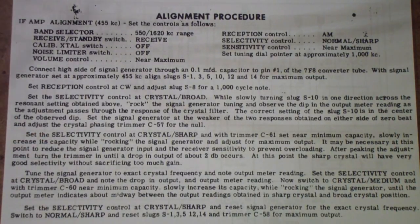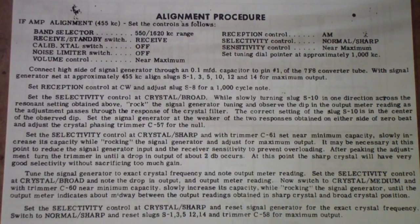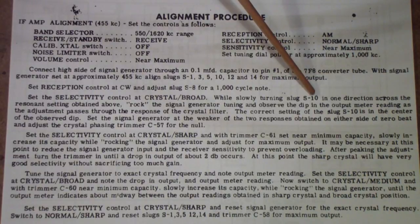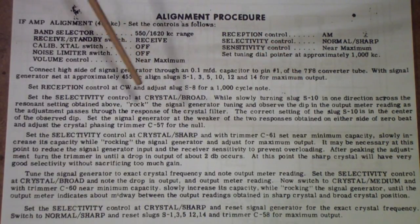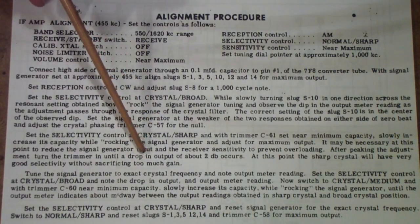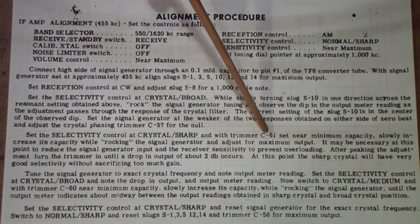There are a series of coils and capacitors in the SX-62 that are relevant. Slug S10, we'll look at on the schematic in a little bit, and you'll see where that is. There also are a couple of capacitors. One is C57, and then later when you get down to the sharp position, you're dealing with C61.